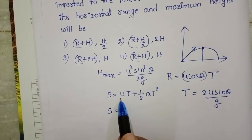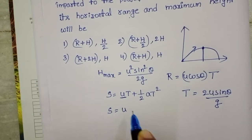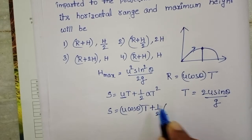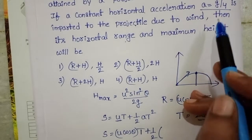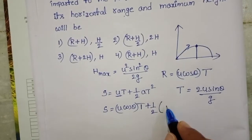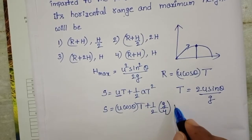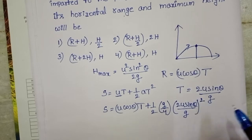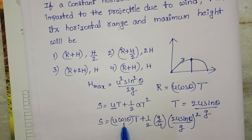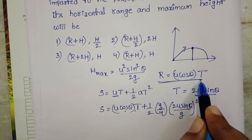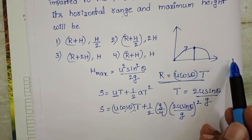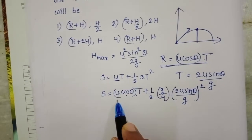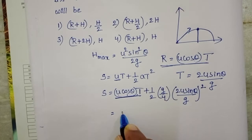So S = u cosθ × T + ½ × (g/4) × (2u sinθ / g)². The term u cosθ × T equals the initial range R — that is, when there is no horizontal acceleration, range equals u cosθ × T. So we substitute the initial range R in that place.